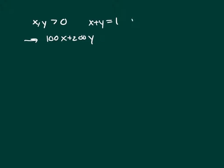We know that y equals 1 minus x. So let's plug this 1 minus x in for y. That's 100x plus 200 times 1 minus x. So that's 100x plus 200 minus 200x. So that is 200 minus 100x.